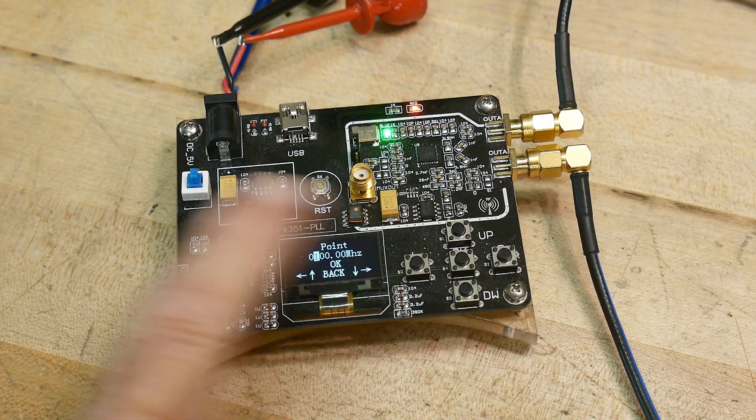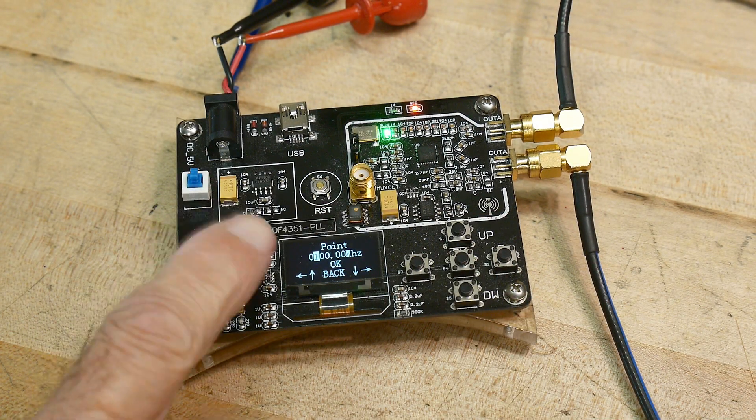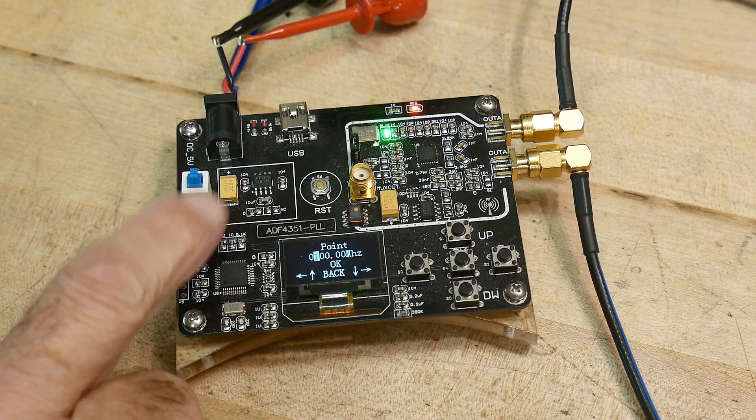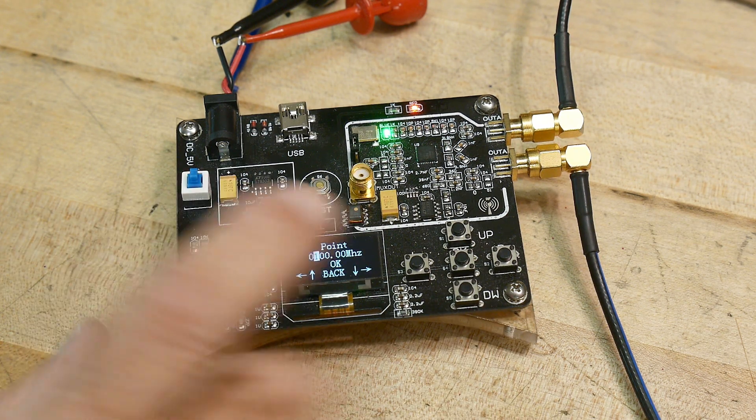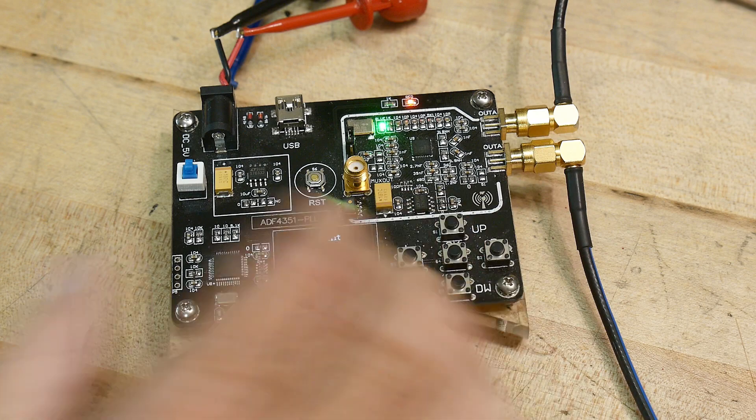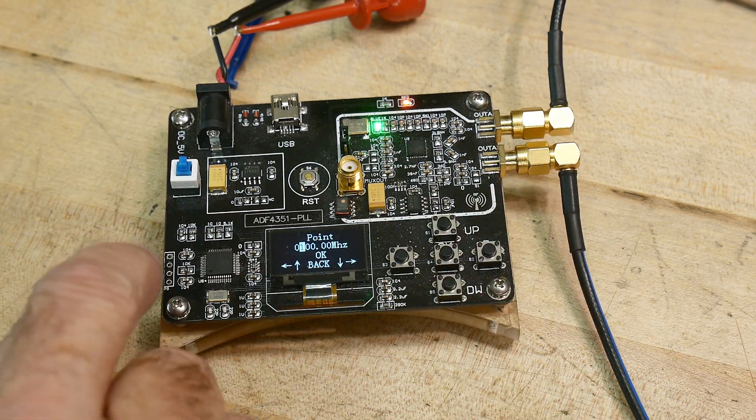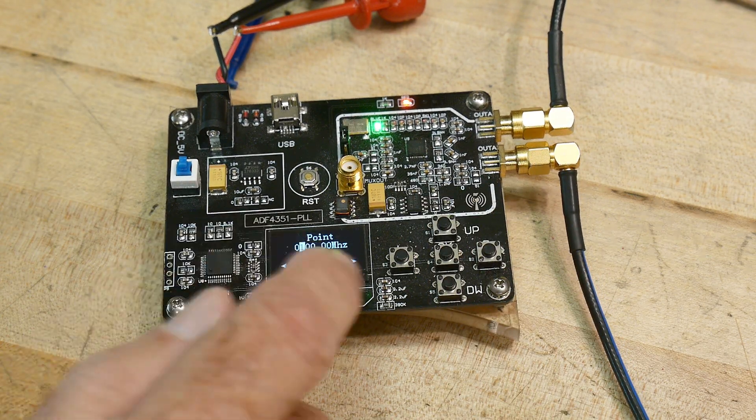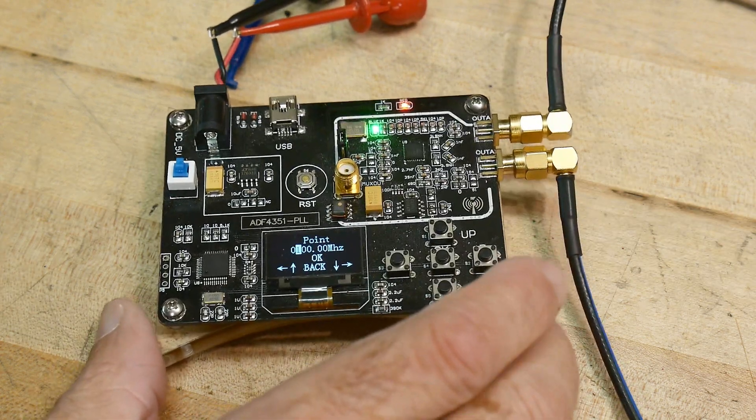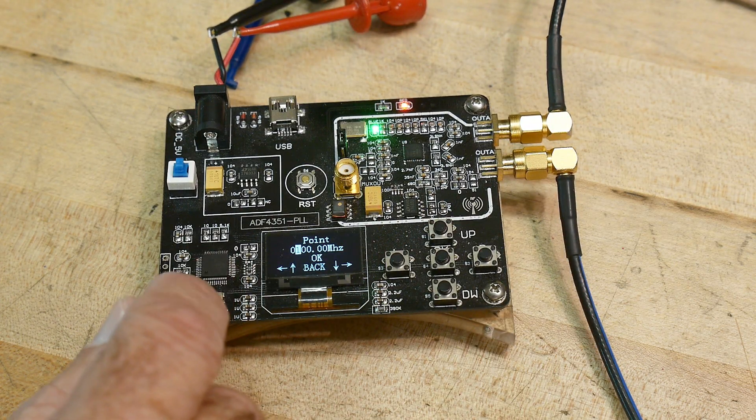I wanted to shoot a small little video here on a couple items. This is the little board that I like to use to generate signals. It goes from 35 megahertz to 4.4 megahertz, and I use it all the time, and it's very nice.